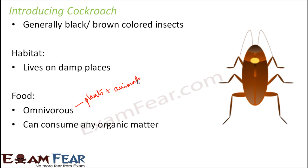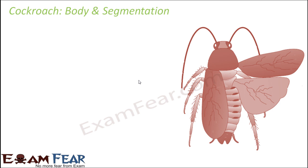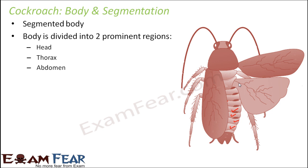When you look at their body, it is also segmented — you can very distinctly see the segments on the body of a cockroach. The body can be divided into three prominent regions: head, thorax, and abdomen. Like in the case of human beings, cockroaches also have a head, then thorax, and then finally the abdomen.